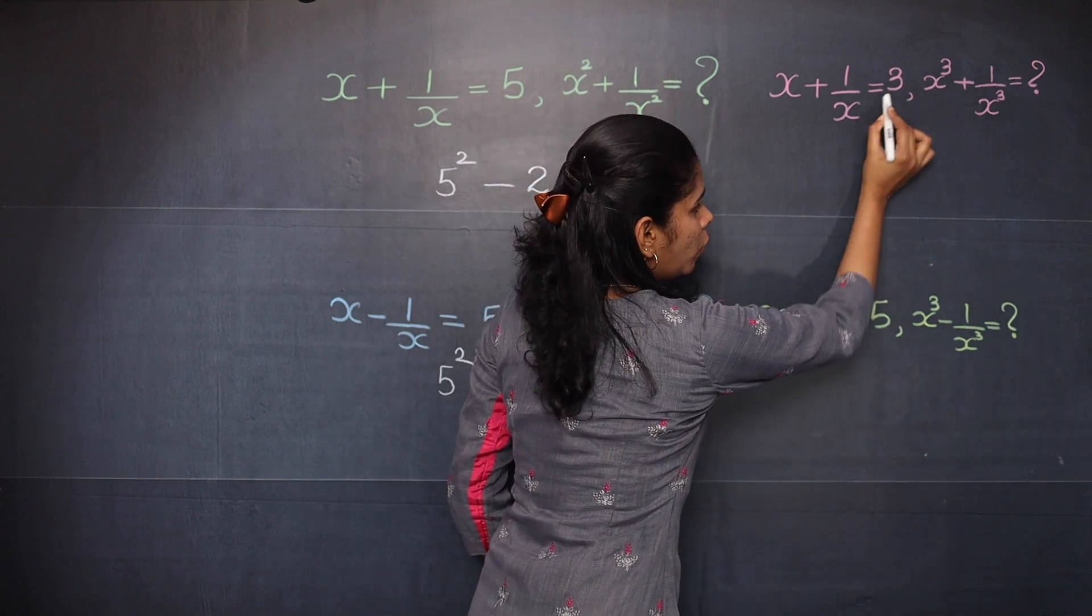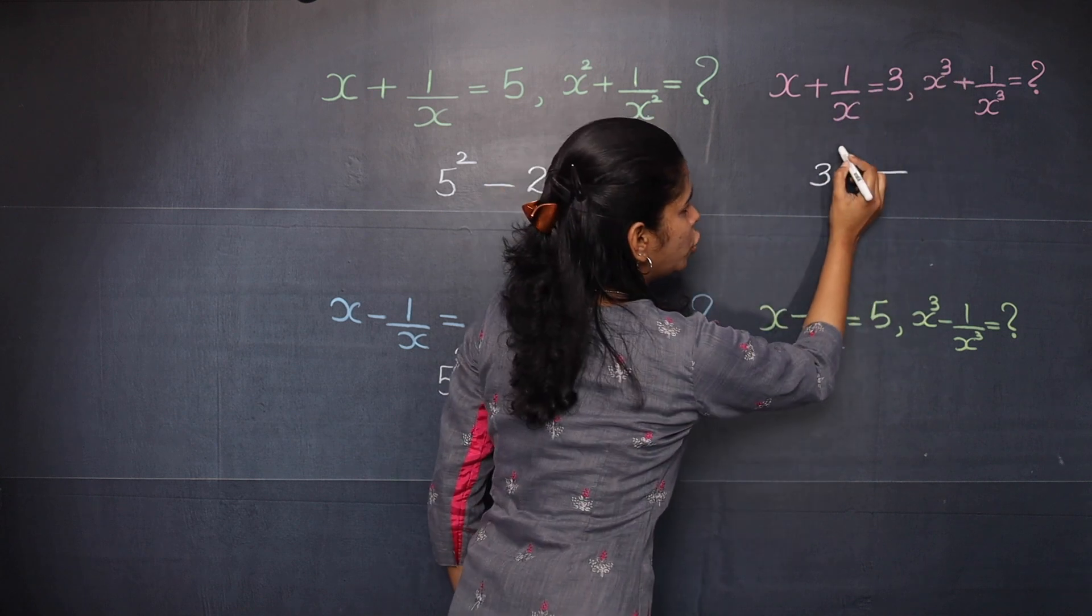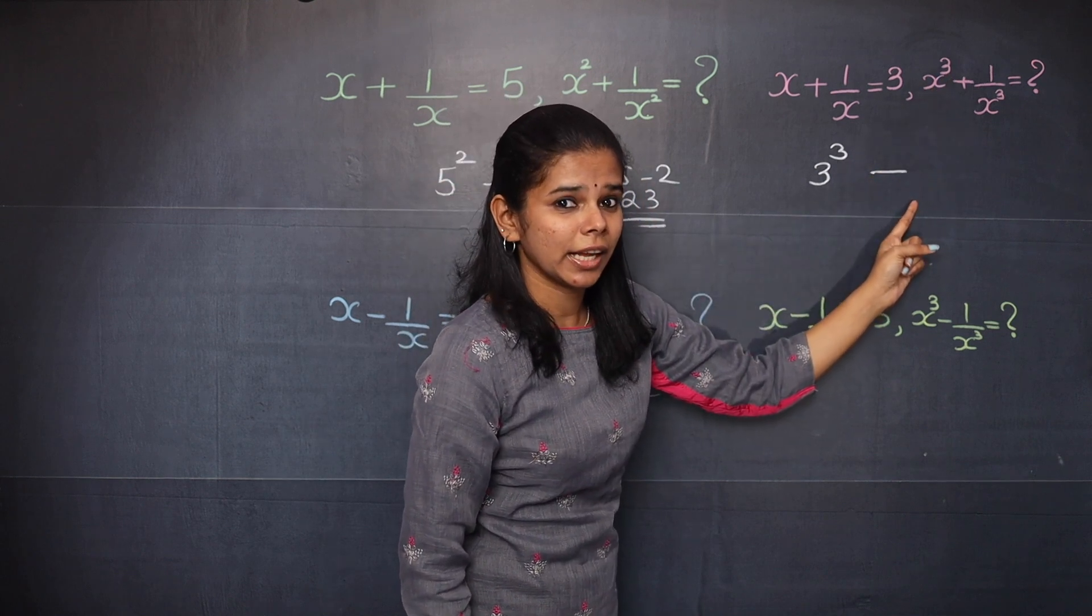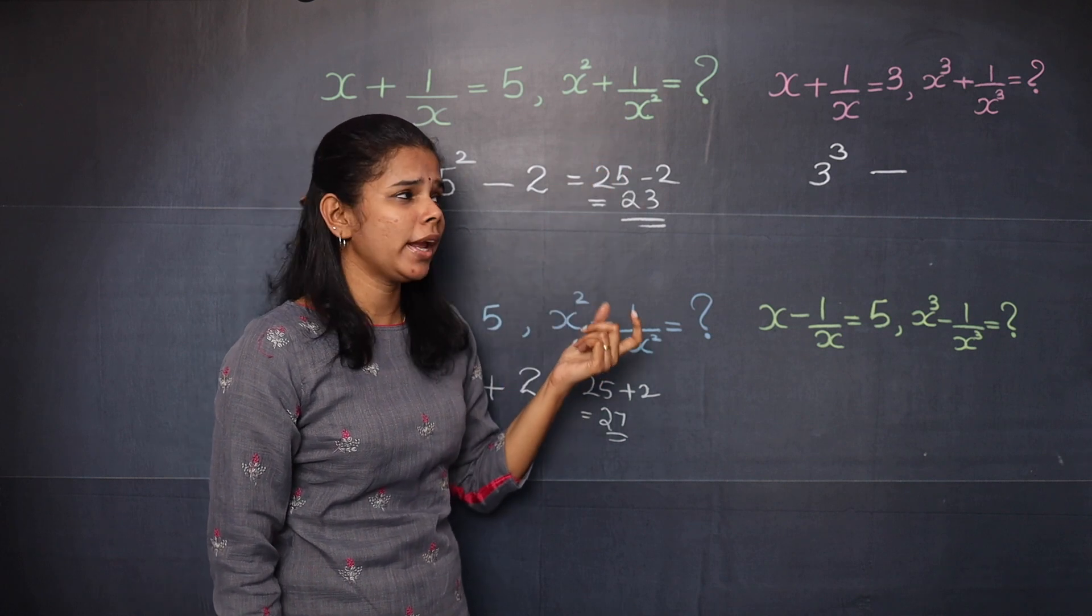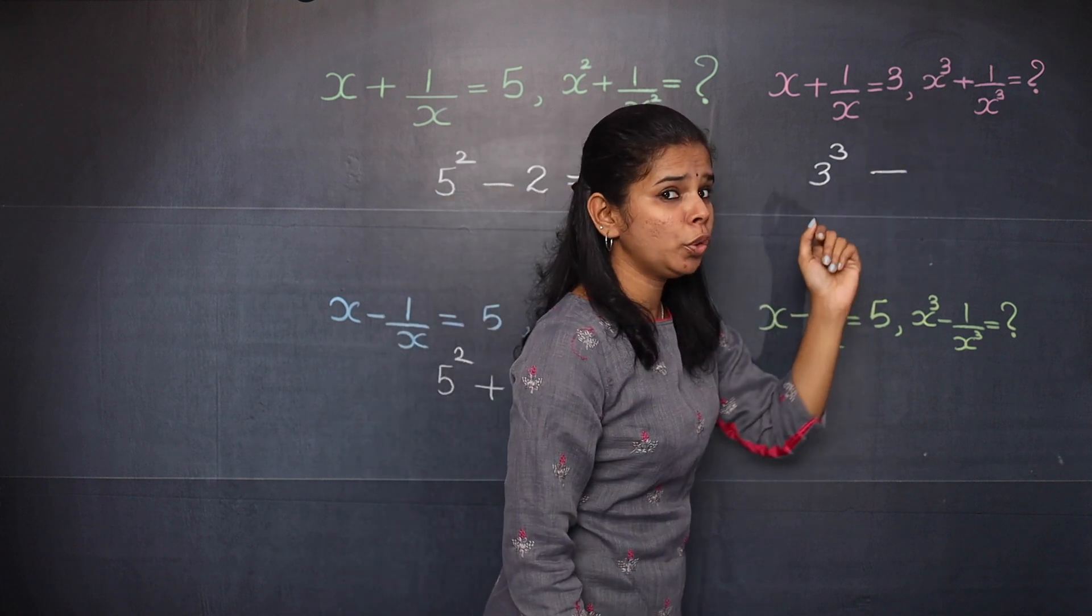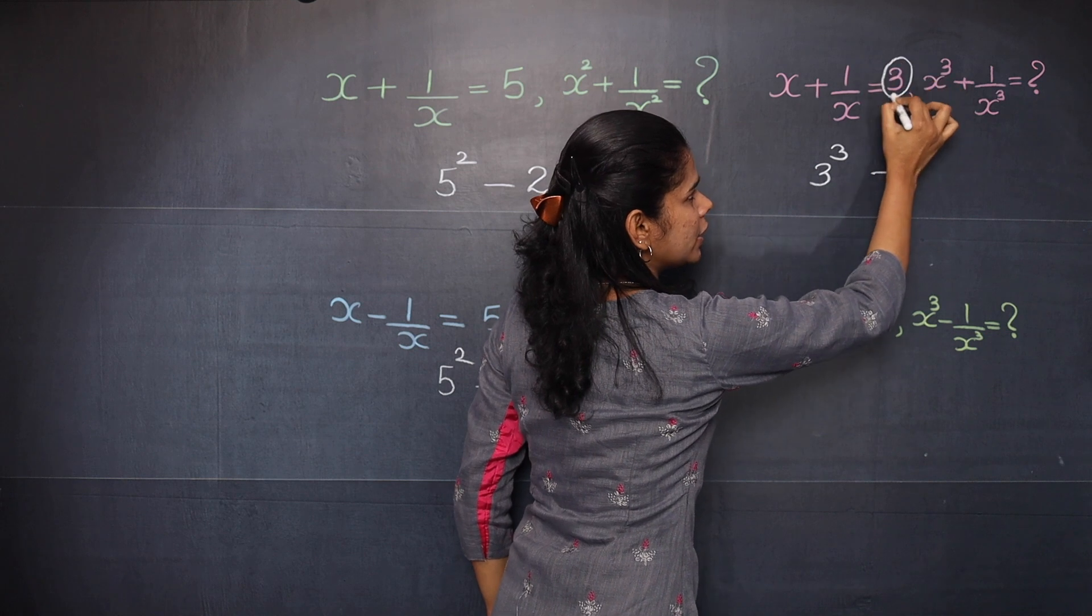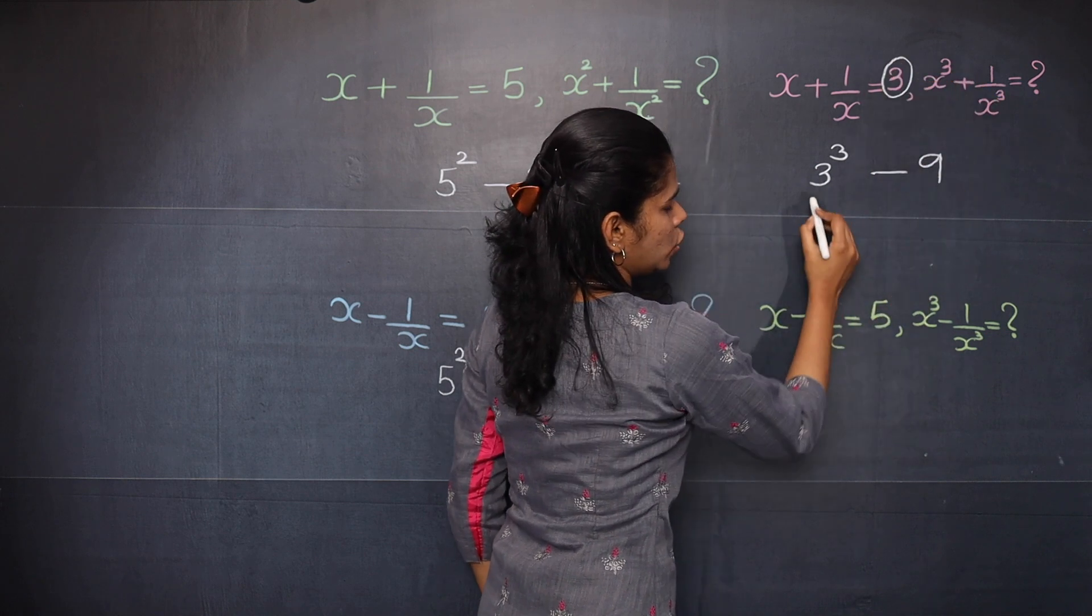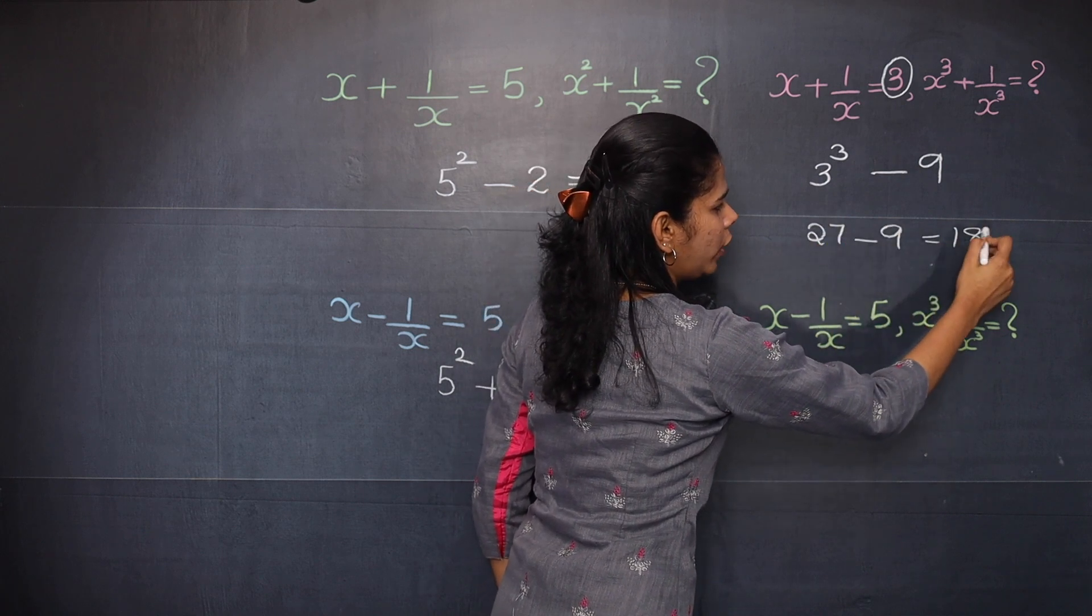So first you will write 3 cube. This is x cube plus 1 by x cube, so you should write 3 cube. The next step is that you should not write 3 here. That is only applicable in the case of x square plus 1 by x square or x square minus 1 by x square. Here since it is cube, you will multiply 3 into the number here. That is 3 into 3 which is 9. So here it becomes 27 minus 9 which is equal to 18.